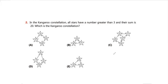Question 2: In the kangaroo constellation, a constellation is a group of stars. All stars have a number greater than three, and their sum is 20. Which is the kangaroo constellation? The two conditions are: all numbers must be greater than three — meaning four, five, six, but not three — and the sum must equal 20.